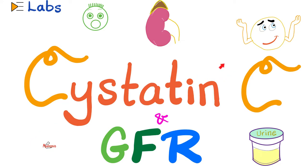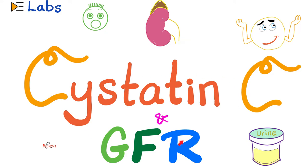In previous videos, we talked about urine electrophoresis, urine proteins, urine uric acid, urine ketone bodies, urine bilirubin, and urine urobilinogen. We talked about how we can estimate the glomerular filtration rate of your kidney, which is a measure of kidney function. One of the ways you can estimate GFR is through creatinine clearance, another is inulin clearance, and a third one is Cystatin C — and this will be the topic of today's video, so let's get started.